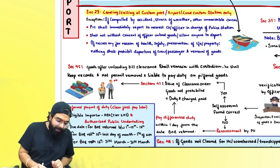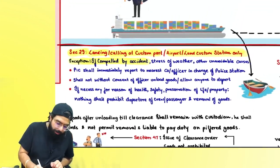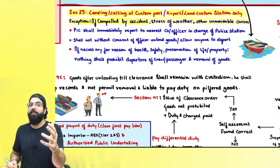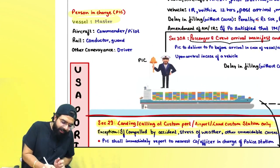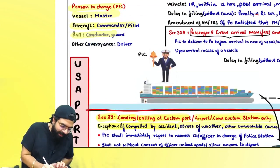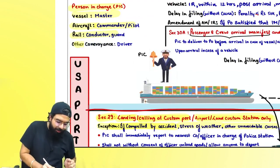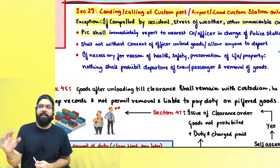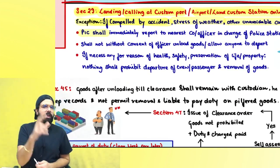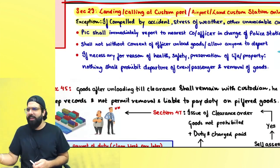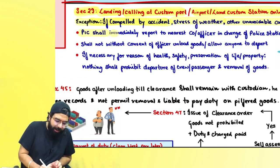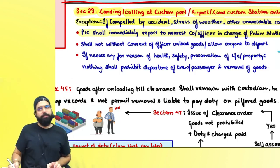But if by chance you are compelled by accident, stress of weather, or any unavoidable circumstance, then the person in charge — the master in case of vessel, commander or pilot in case of aircraft, conductor or guard in case of rail, and driver in case of any other conveyance — can come to any other place. But you must immediately report to the nearest customs officer or officer in charge of a police station.